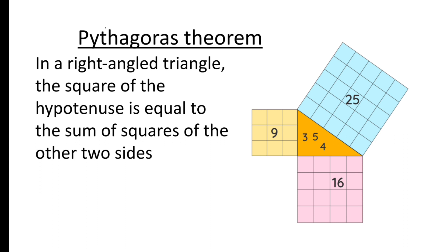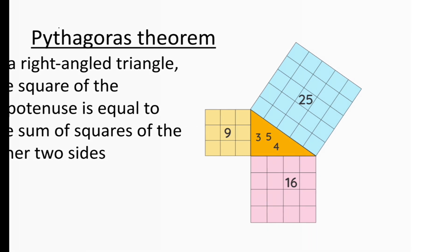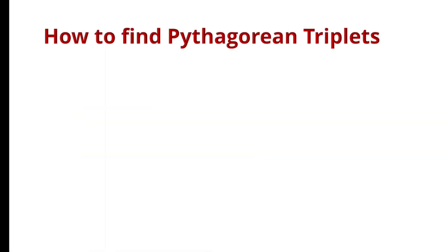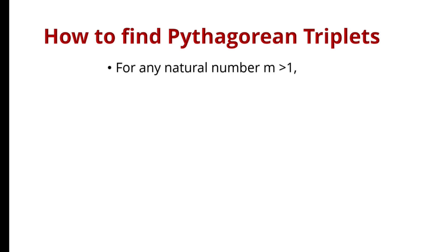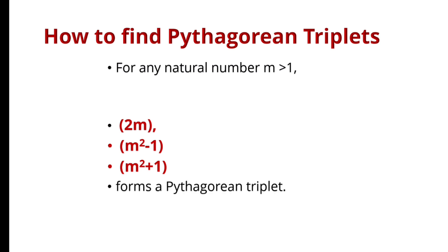These three numbers which create the right angle triangle are the Pythagorean triplets, when all three numbers are positive integers. Now let us find how to generate Pythagorean triplets. Take one positive integer m, which is greater than 1. The condition is that 2m, m²−1, and m²+1 — these three numbers form a Pythagorean triplet.